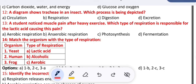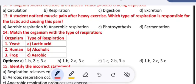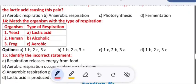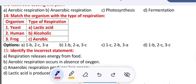A student noticed muscle pain after heavy exercise. Which type of respiration is responsible for the lactic acid causing this pain? A) aerobic respiration, B) anaerobic respiration, C) photosynthesis, D) fermentation. These are the four options given, the correct one you can select and write in the space provided. Match the organisms with the type of respiration: organism - yeast, human, frog; type of respiration - lactic acid, alcoholic, aerobic respiration.